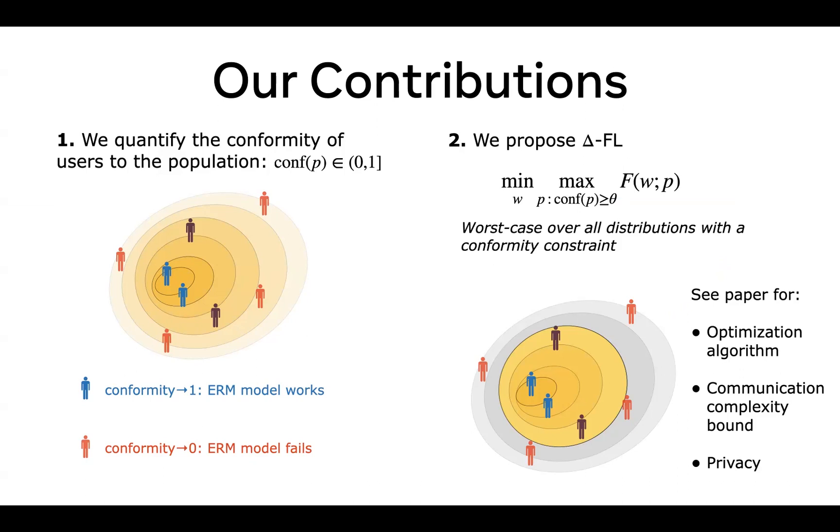At the other extreme, we have the users in red, whose distribution is very far away from the average training distribution. In this case, their conformity is pretty close to 0, and the ERM model fails. The users shown here in purple are somewhere between these two extremes.